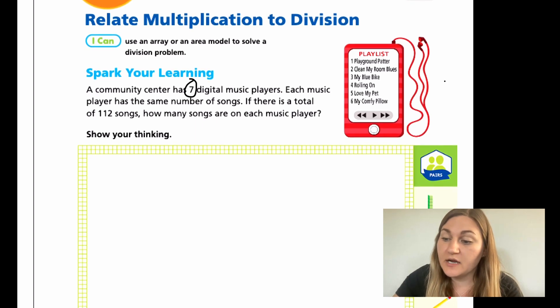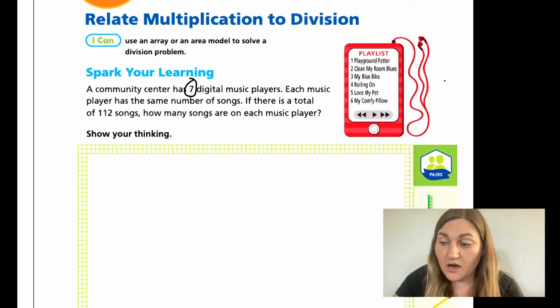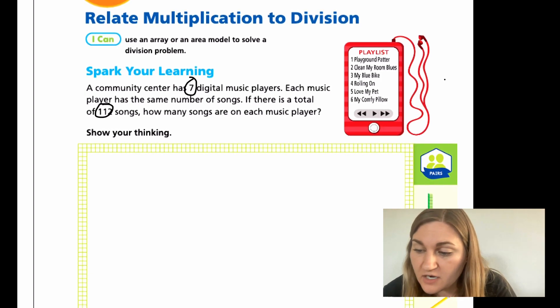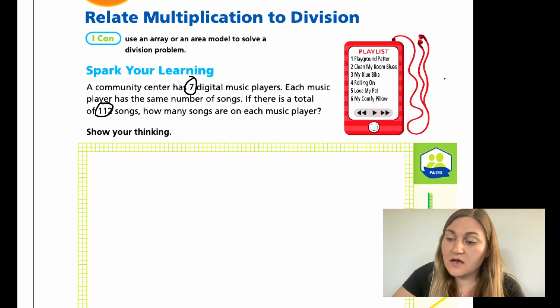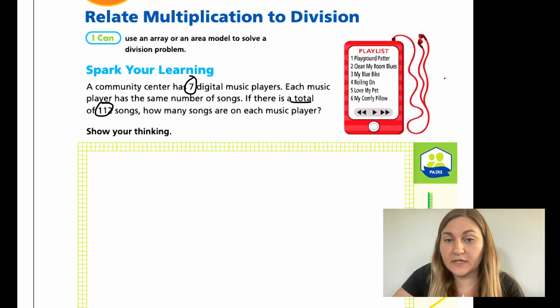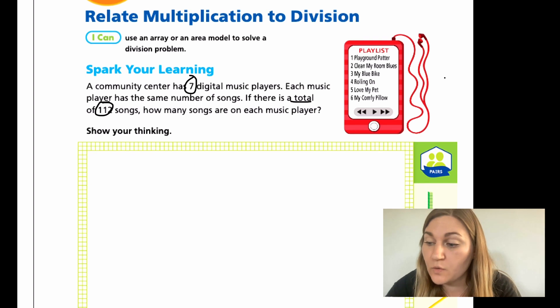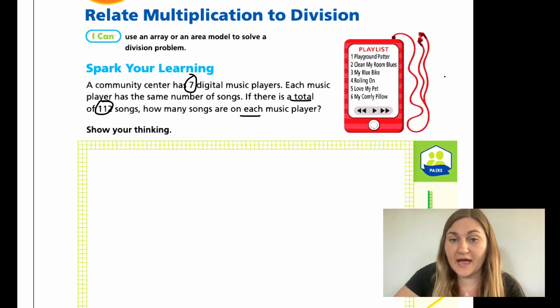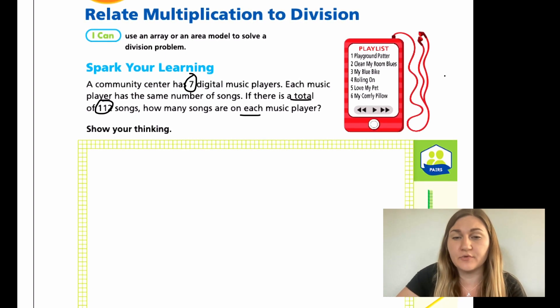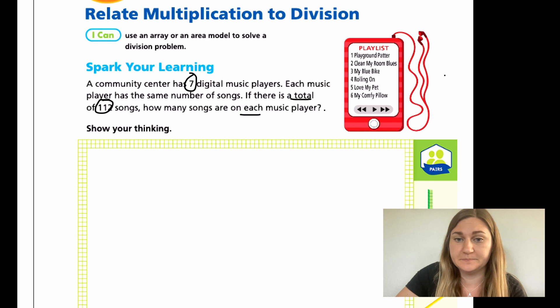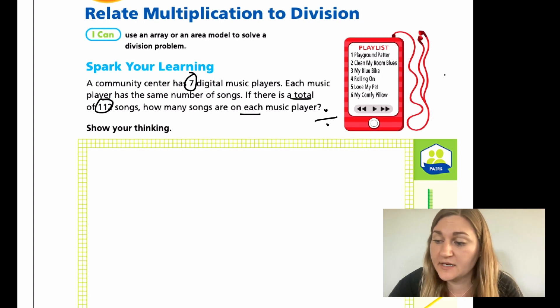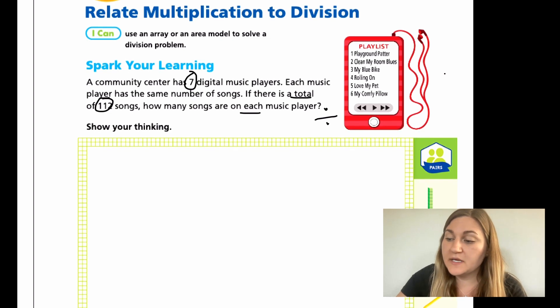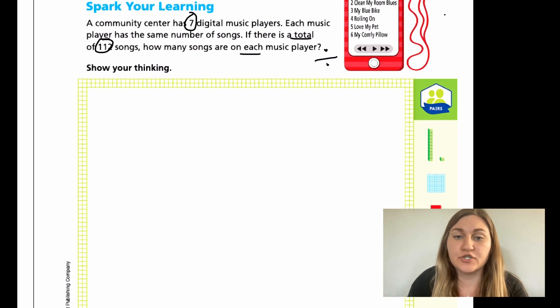So they gave us a total of 112, but the question is asking how much does each of the seven have? So if you have a total and you're looking for each, what operation do you think we're going to be using? If you said division, you'd be correct. All right, so what we're going to be doing in this green box is we are going to be creating a picture for what this looks like without doing the standard algorithm.